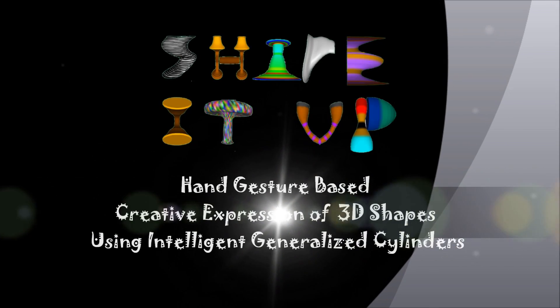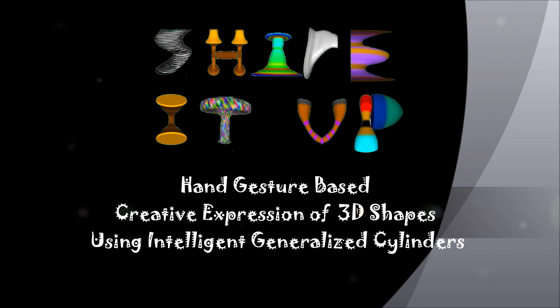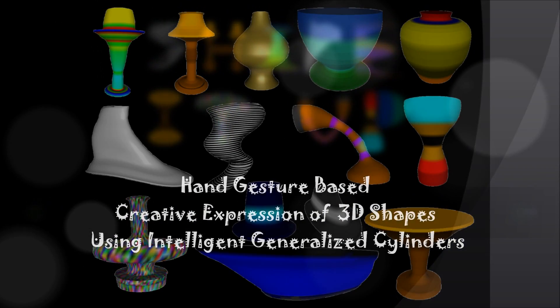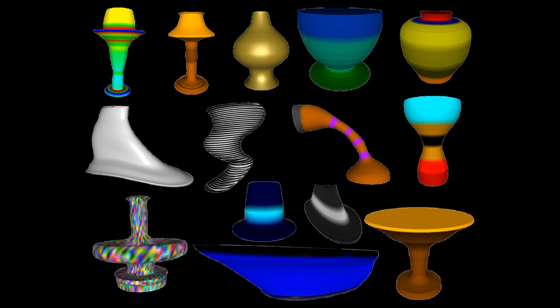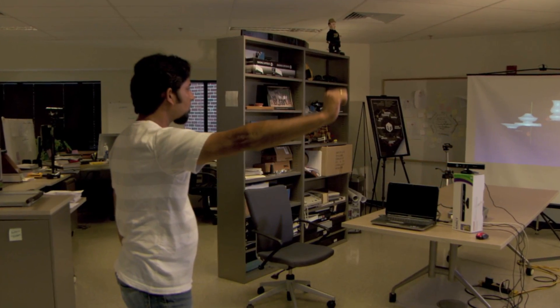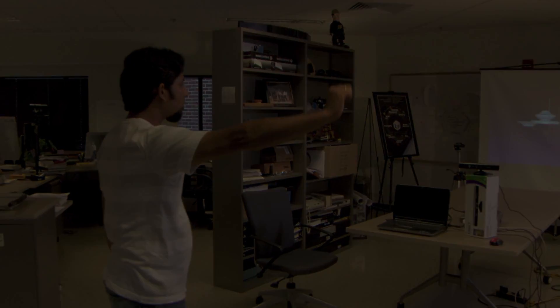We present Shape It Up, a design tool that enables designers and artists to create and modify symmetric and asymmetric 3D shapes using just their hands as a natural user interface, instead of keyboard and mouse.